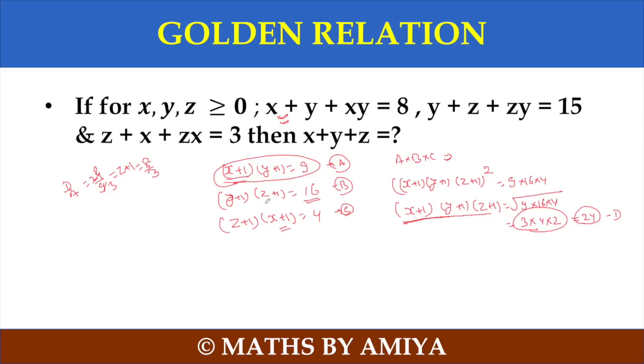If I divide the same, then here y plus 1, y plus 1 cancel. z plus 1, z plus 1 cancel. What can I do? x plus 1 is nothing but 24 upon 16. So if I cancel out this one, this one is 3 by 2. This will be.